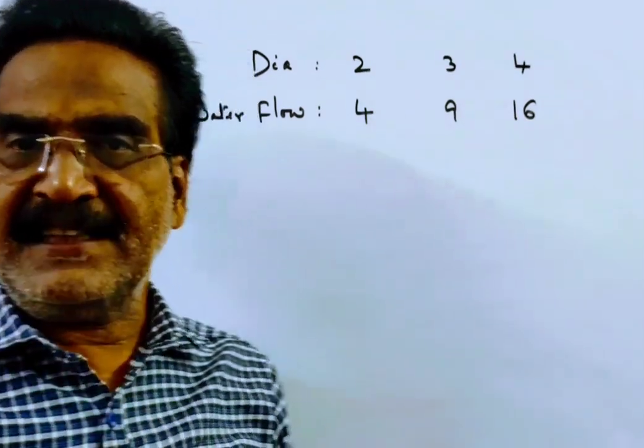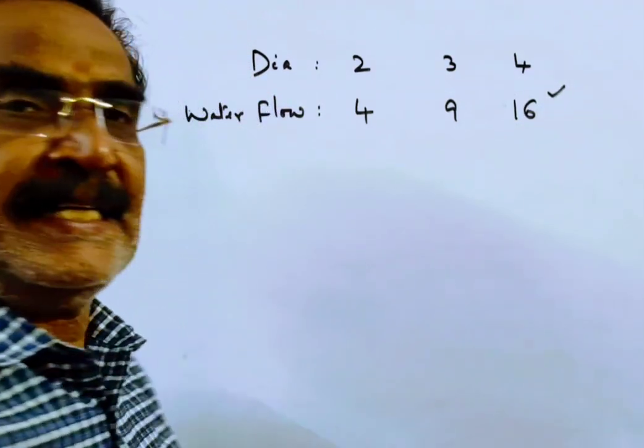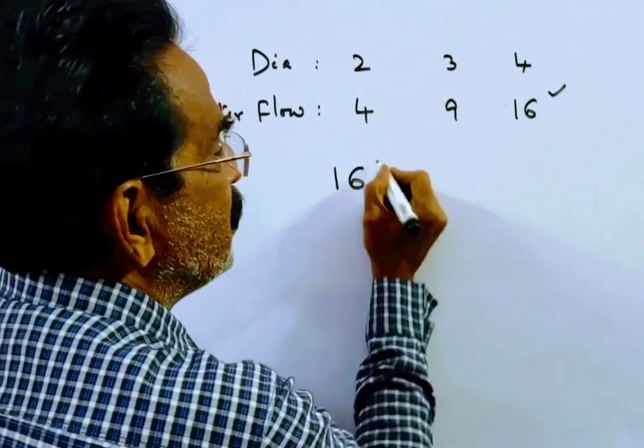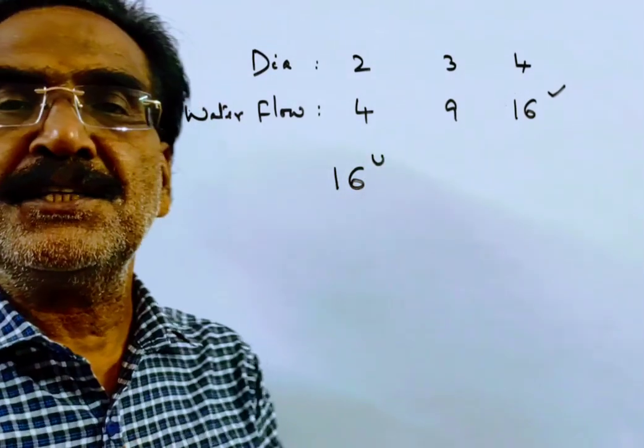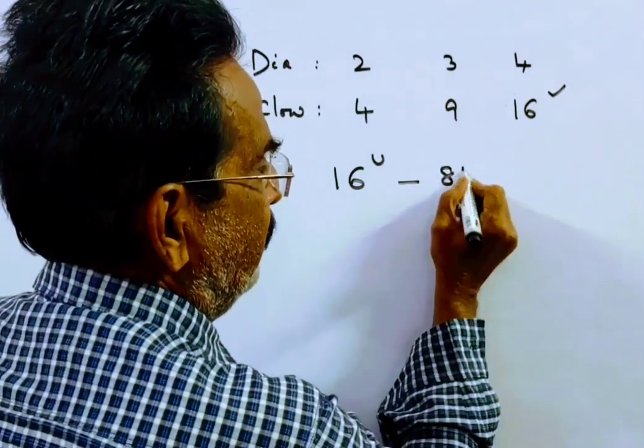Friends, it is given that the biggest pipe can fill the tank in 81 minutes. So if 16 units are flowing, then it takes 81 minutes.